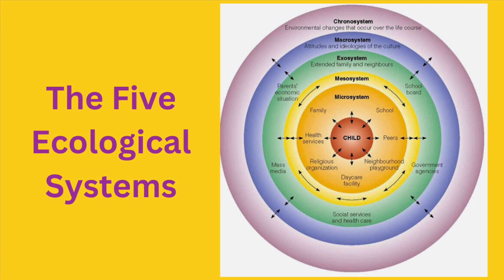The last system is the chronosystem, which includes the transitions and shifts in one's lifespan. This may also involve the socio-historical context that may influence a person. One good example is how divorce, as a major life transition, may affect not only the couple's relationship but also their children's behavior. Research shows that children are negatively affected in the first year after a divorce, but in subsequent years the interaction within the family becomes more stable and agreeable.